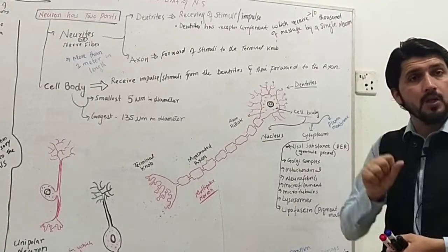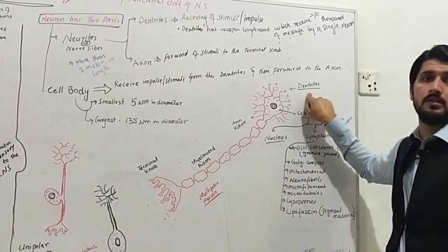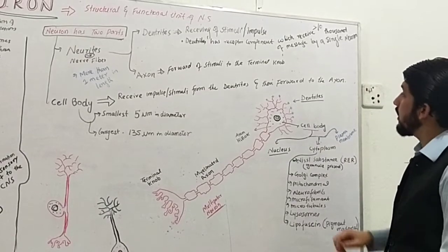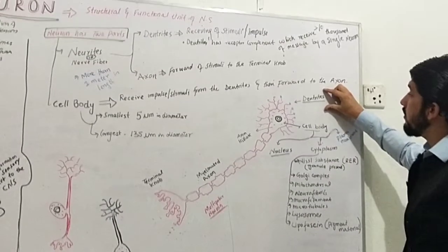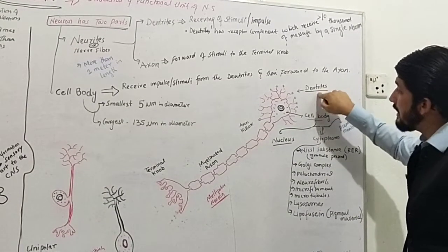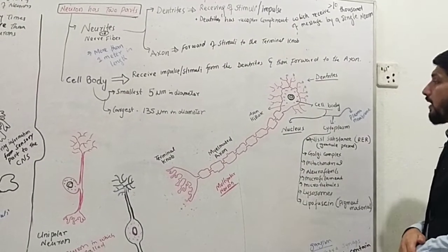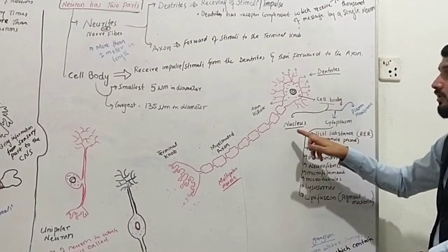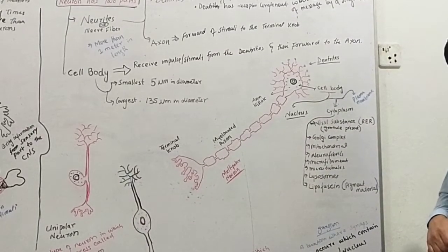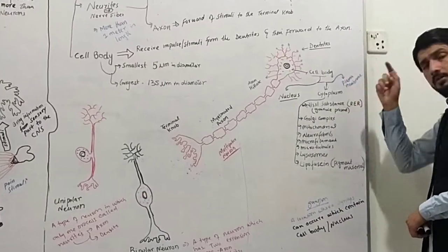The cell body contains nutrition. The dendrites receive the message or stimulus and pass it toward the cell body. The dendrites receive and convey the impulse or stimuli toward the cell body.